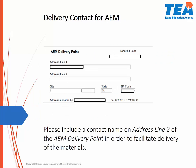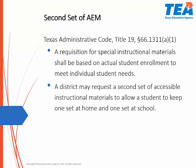Sometimes when districts receive accessible instructional materials, whoever receives the shipment is not sure exactly what to do with them. If you will include a contact name on address line 2 of the AEM delivery point on the Confirm Addresses page, it will help to facilitate delivery of the materials. Texas Administrative Code Title 19, Section 66.1311 states that a requisition for special instructional materials shall be based on actual student enrollment to meet individual student needs. If you determine that there is a need for an additional set of materials for a student to use, such as one at home and one at school, please indicate this when you send TEA the enrollment update. We can provide for an additional set of materials when we update the enrollment.